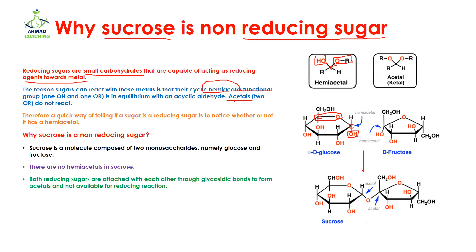But if no hemiacetal group is present and only acetal groups are present, it means that this sugar is a non-reducing sugar. Acetal means that there are going to be two –OR groups instead of an –OH group — here we will also have an –OR group. So a quick way of telling if a sugar is a reducing sugar is to notice whether or not it has a hemiacetal group, and if the hemiacetal group is absent, it means it's going to be a non-reducing sugar. We have to keep this in mind when we are studying the structure of sucrose.